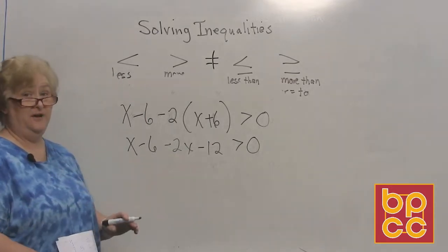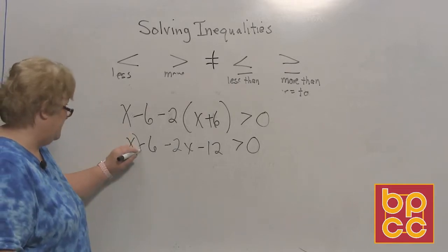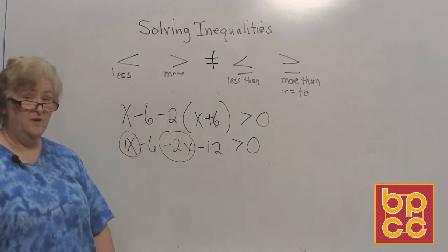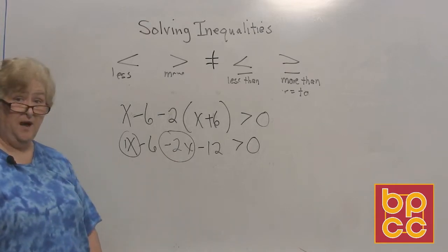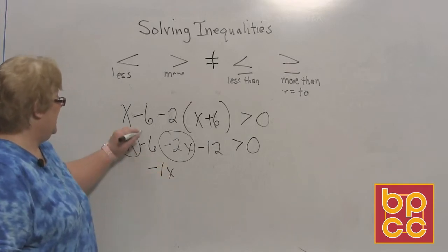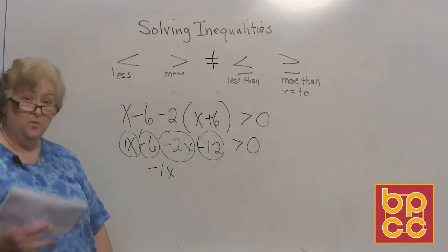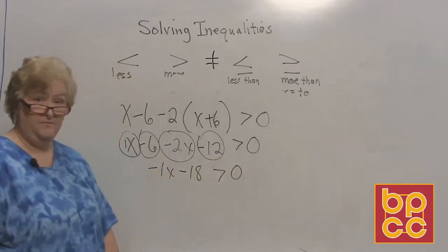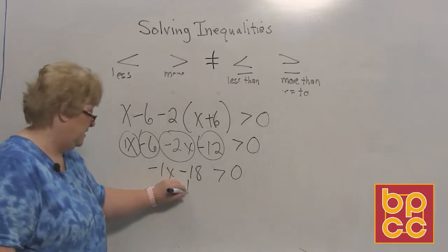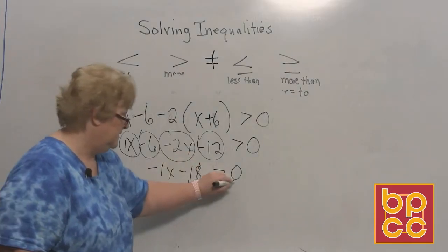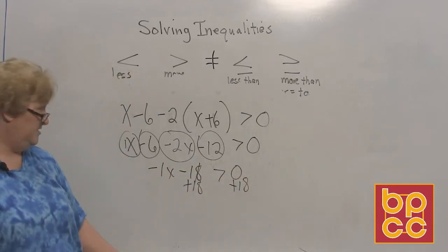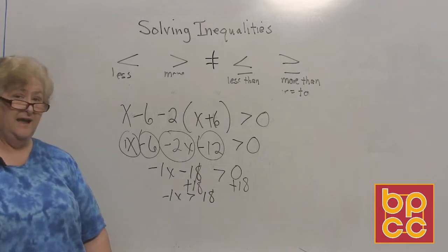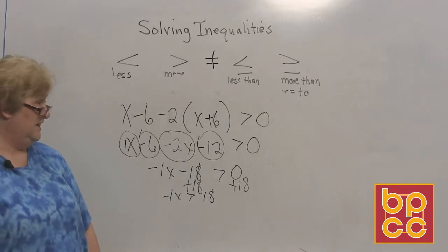Now combine all variables and numbers. We have a positive 1x and a negative 2x — the difference is 1, but it's a negative x because we have more negative than positive. So negative 1x. We have a negative 6 and a negative 12, which together make a negative 18. So negative 1x minus 18 is greater than 0. Move the 18 to the other side with a plus 18. We have negative 1x is greater than 18. But we can't stop — we have a negative variable.